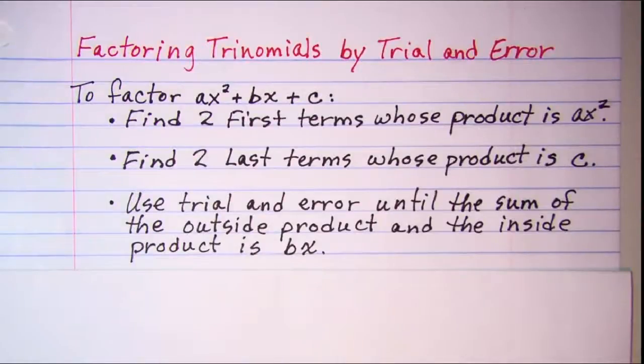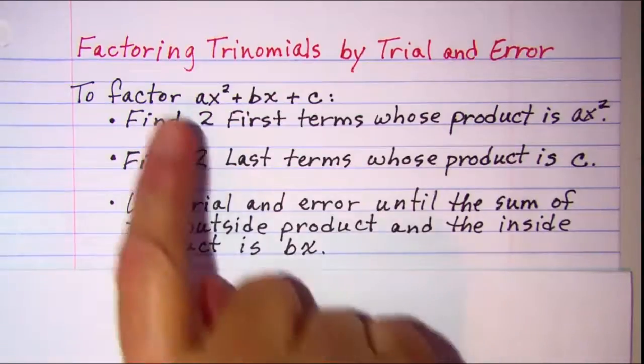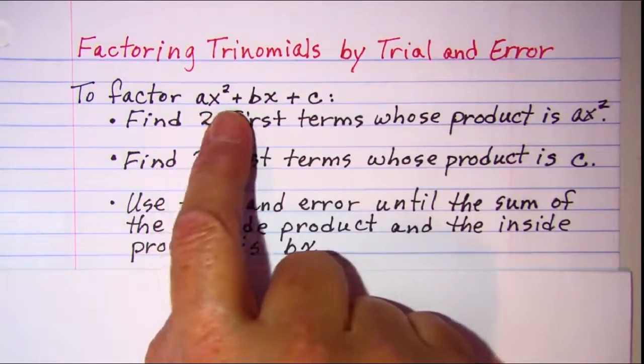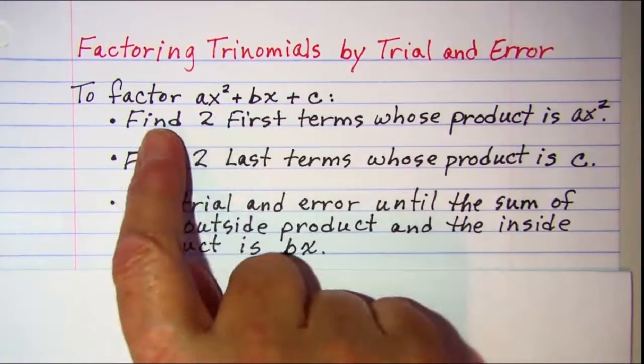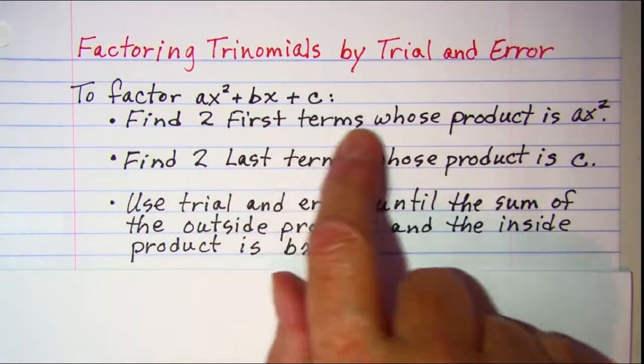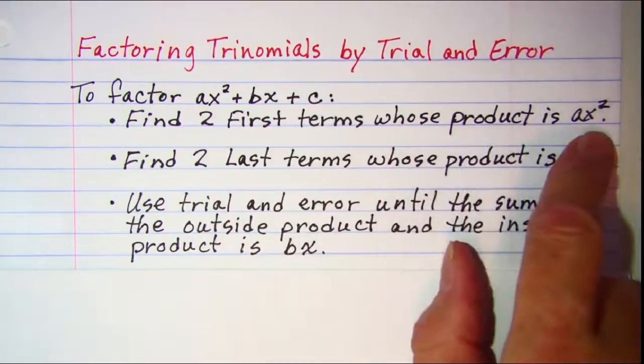In this video we'll be factoring trinomials by trial and error. To factor the trinomial ax squared plus bx plus c, we want to find two first terms whose product is ax squared.